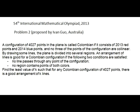International Mathematical Olympiad 2013, Problem 2. A configuration of 4027 points in the plane is called Colombian if it consists of 2013 red points and 2014 blue points, and no three of the points of the configuration lie on the same straight line. By drawing some straight lines, the plane is divided into several regions.